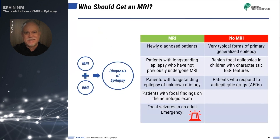MRI combined with electroencephalography is essential to confirm the diagnosis of epilepsy. The International League Against Epilepsy recommends that, with a few exceptions, all patients with this disease should undergo MRI or CT. However, MRI is preferred because it provides more soft tissue details than CT. Patients with typical forms of primary generalized epilepsy or benign focal epilepsy in children with characteristic EEG features usually do not benefit from imaging, and those who respond to anti-epileptic drugs may also be excluded.